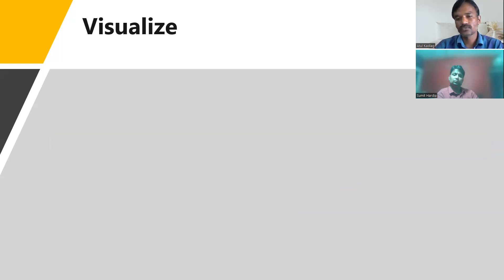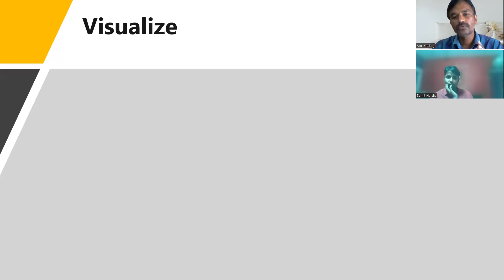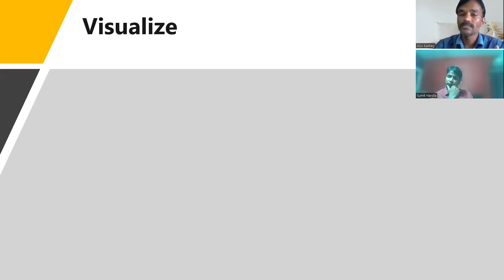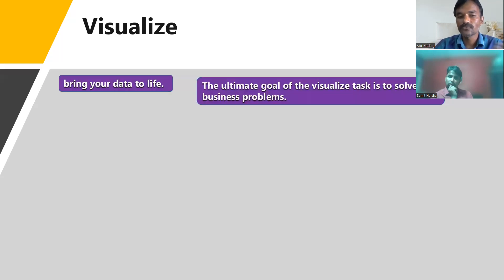The next step is Visualize. Once data has been prepared and the data model created, we use that model to create visualizations. Data analysts should be able to understand which visual should be used for which data, so that it will be more effective for the business. There are column charts, line charts, bubble charts, pie charts, and more. A data analyst should understand which visual best interprets the data — this is what brings data to life.